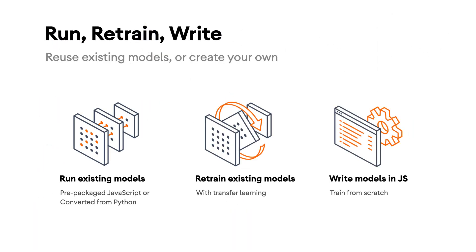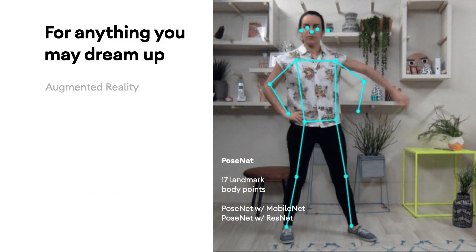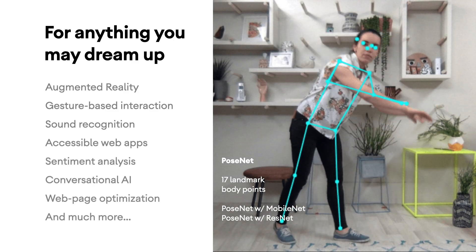With TensorFlow.js, you can run, retrain via transfer learning, or write your own models completely from a blank canvas. You can use it for anything you may dream up — things like sound recognition, gesture-based interaction, sentiment analysis, conversational AI, and much more. As we're just at the start of this learning path, we'll be starting by using pre-trained models to help solve a problem. Someone has taken the time to create a machine learning model for a very specific task and made the model public for others to reuse. In a few lines of code, you can import the model with TensorFlow.js and try it out on your own data. Today, we'll be trying to solve the common problem of comment spam on websites. Now you know what machine learning is — head on to the next video to learn more about how we can use it to solve this specific problem.